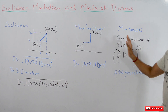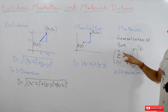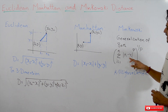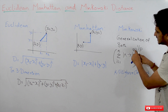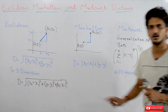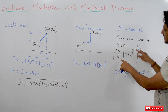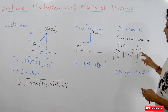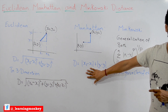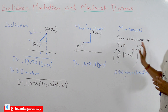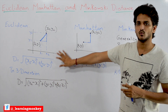Coming to Minkowski distance — it is a generalization of both Euclidean and Manhattan distance. The formula is: the summation from i equals 1 to n of the absolute value of (xi minus yi) raised to the power p, then take the whole to the power 1/p. If p equals 2, you get Euclidean distance. If p equals 1, you get Manhattan distance. p can be any value, but mostly we use 1 and 2.